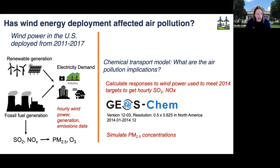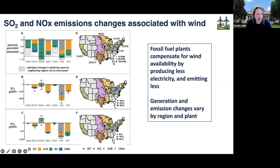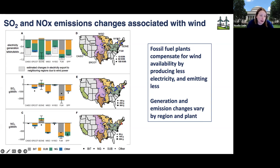What comes out of this equation is the response of every single power plant when an additional unit of wind power comes online, and we do this for each of the different electricity regions in the United States. Once we have that response, we can think about how it scales up — this is where we fuse data and modeling. We use a chemical transport model to understand the total amount of wind power needed to meet renewable portfolio standard targets, get a projection of hourly SO2 and NOx, and simulate the geographic distribution of PM2.5 concentrations.